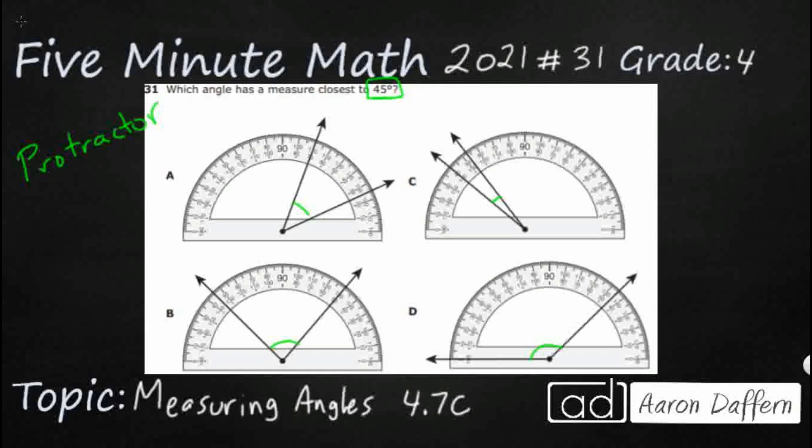And we need it to be 45 degrees. So 45 degrees, that little circle after the 5, that's the degree symbol. And so let's figure out what we know because we can actually eliminate some of these.